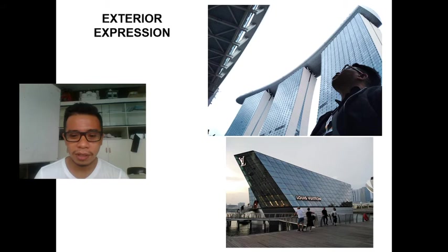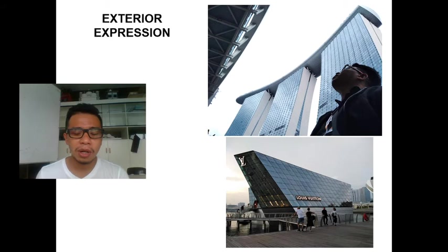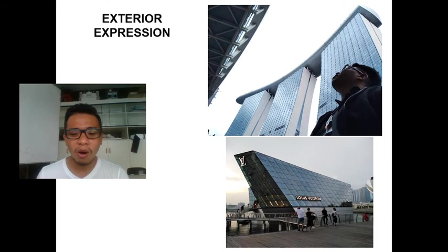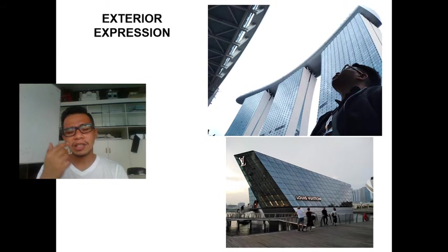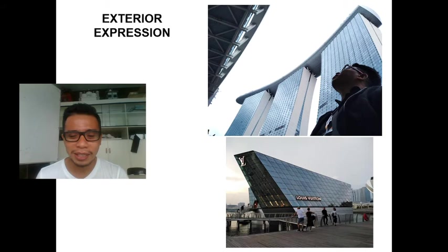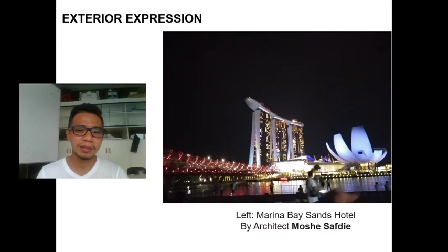For example, Marina Bay Sands in Singapore — its exterior expression reflects Singapore's economic status and prestige. The Louis Vuitton building also expresses prestige through its exterior design. Looking at a building's exterior should convey what it is and what status it represents.